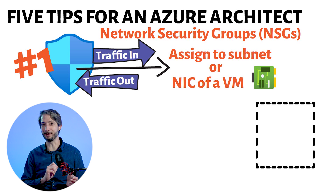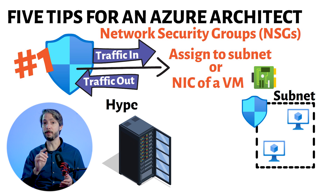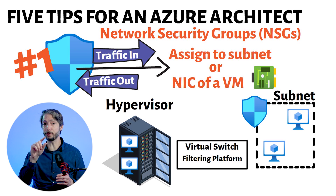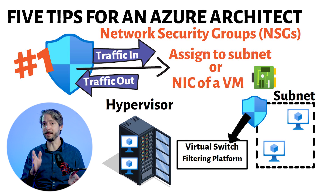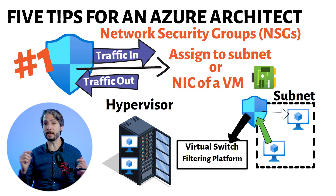Now here's the trap that many fall into. If you assign an NSG to a subnet, it's not actually a device that sits in the subnet allowing or denying traffic in and out. In Azure, there's a hypervisor host where your different virtual machines are running. On this hypervisor, there's a virtual switch with a virtual filtering platform. This virtual filtering platform is where the NSGs are enforced. So it doesn't matter if you apply NSGs to a subnet or a NIC belonging to the VM itself — they're actually enforced in this virtual filtering platform. That means NSGs applied to a subnet can also filter traffic between virtual machines which are in the same subnet.